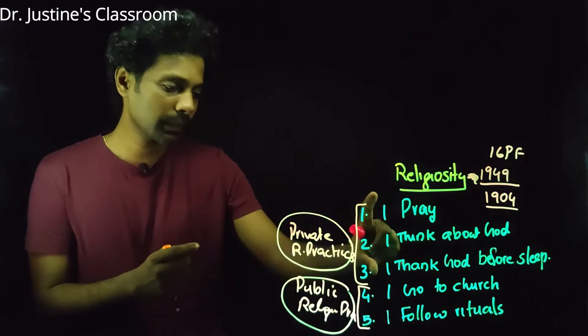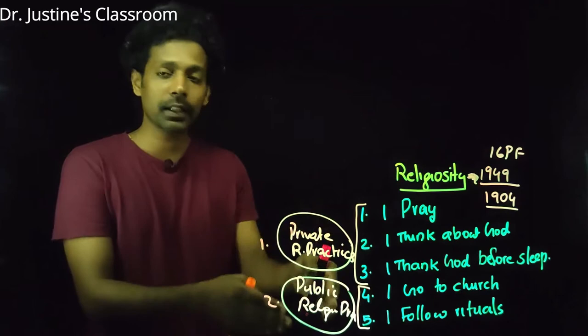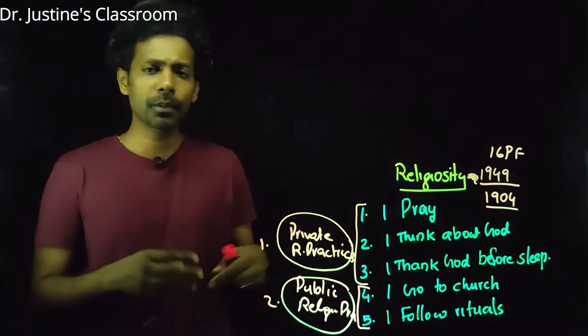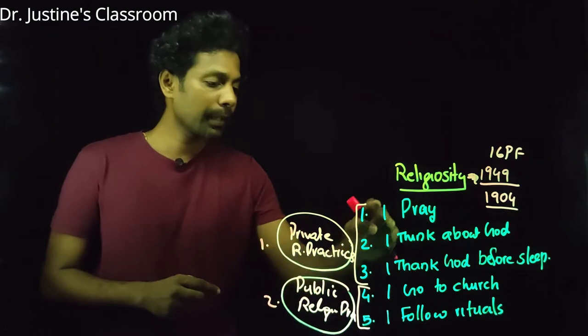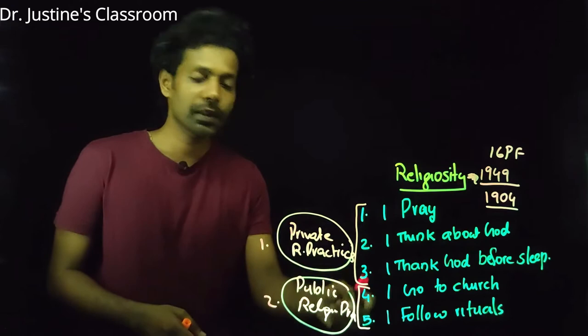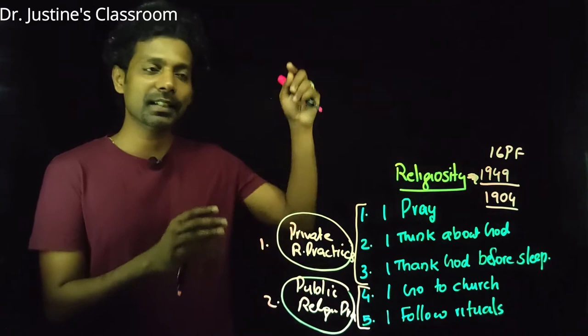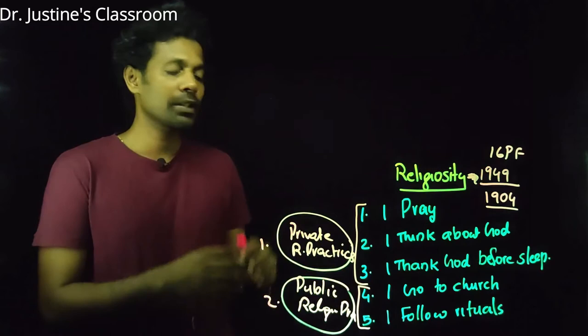What we try to do is take all the behaviors, find correlations, and understand that these items are correlated — they form a cluster — and then find the reason for that similarity. I reduce the five statements to possibly two factors. For example, one statement like 'How do you rate your private religious practices?' can replace the first three statements, and 'How do you rate your public religious practices?' replaces the remaining two. This is how Cattell reduced thousands of adjectives to 16 factors.